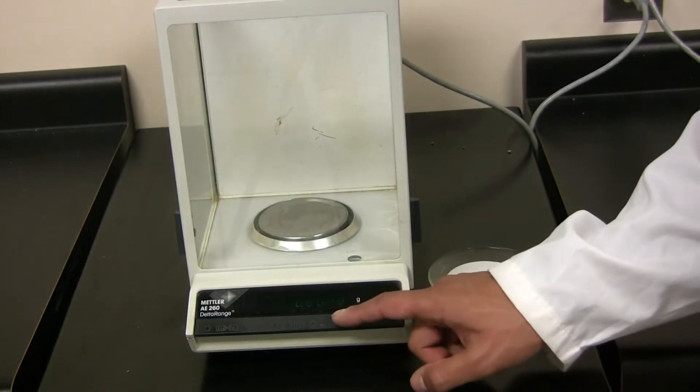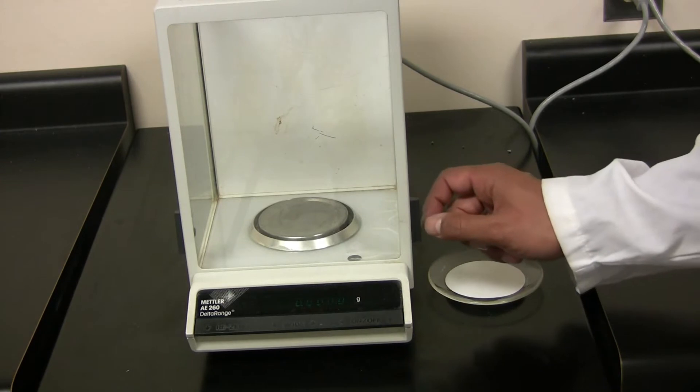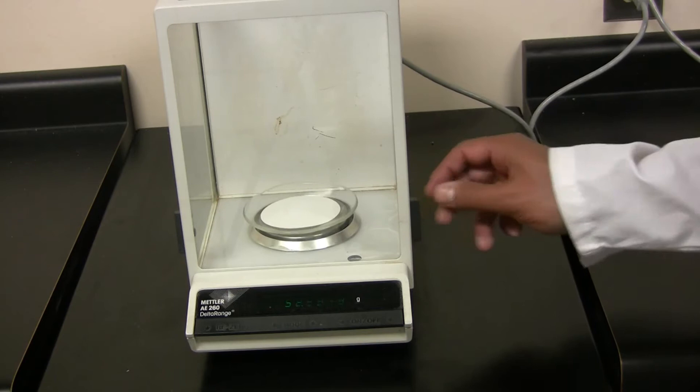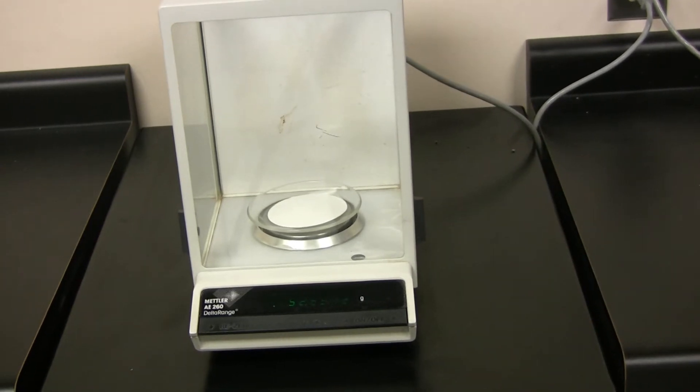Make sure to tare the analytical balance first. Open the door and place the watch glass and filter paper inside and close the door. You want to record this weight.